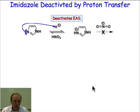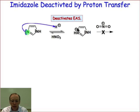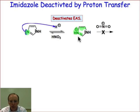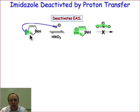Let's look at imidazole quickly. If we have an N2 nitrogen in the ring, we're going to undergo deactivation for the same reasons we encountered with pyridine. We first do acid-base chemistry, which lowers the HOMO, making the π system much less reactive. Those π electrons, now being part of a positively charged ring, are no longer very reactive. The presence of an N2 nitrogen in a molecule like imidazole makes it very unfavorable toward electrophilic aromatic substitution in which the π system acts as a nucleophile.